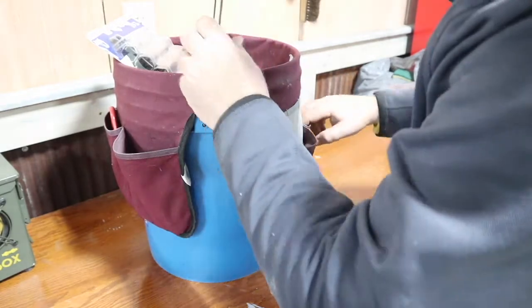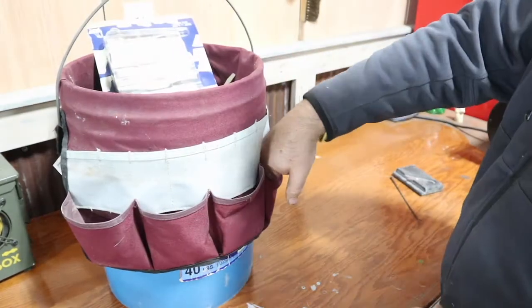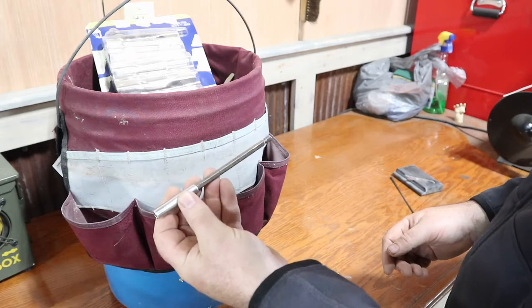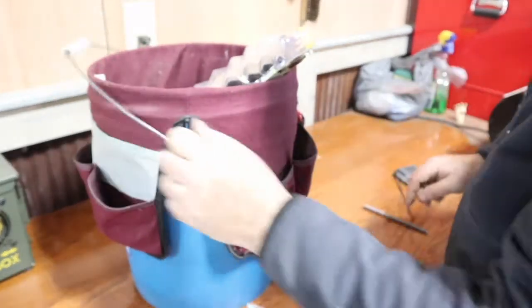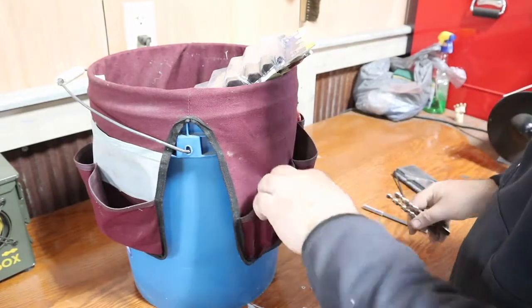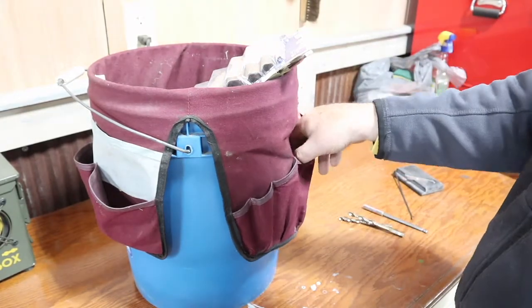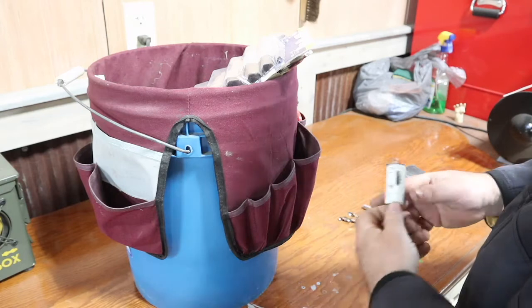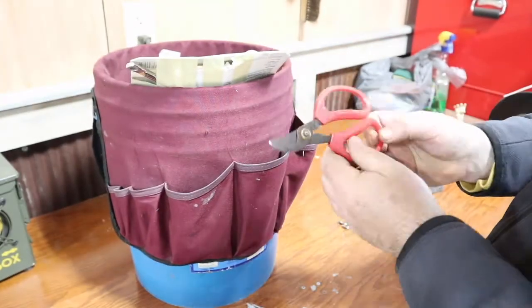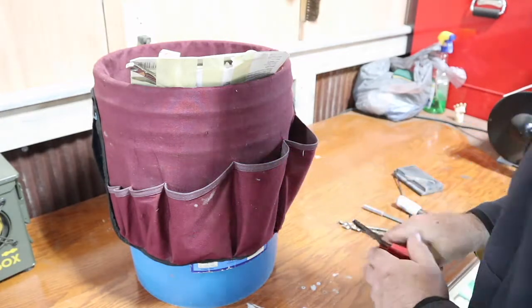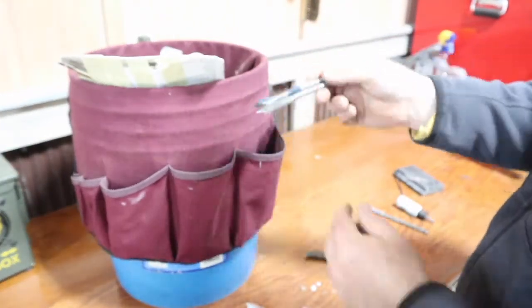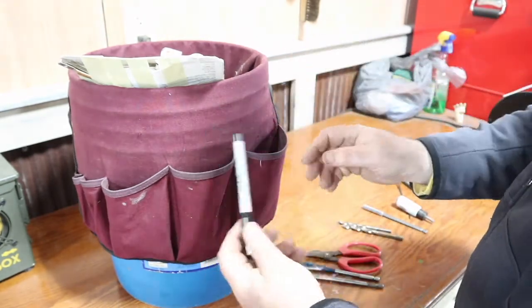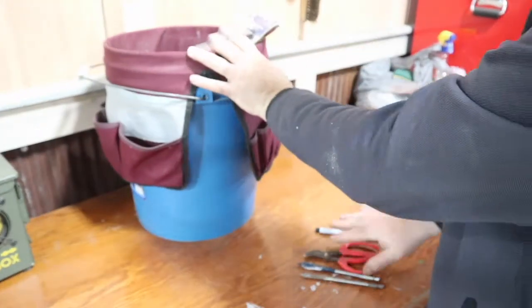Empty pockets. Screwdriver bit extension. Two drill bits. Looks like a one-inch hole saw. Yep, one-inch hole saw. Some rusty snips. Two drill bits. And a Sharpie. That's what we've got in the pockets. Let's see what we've got inside the bucket itself.